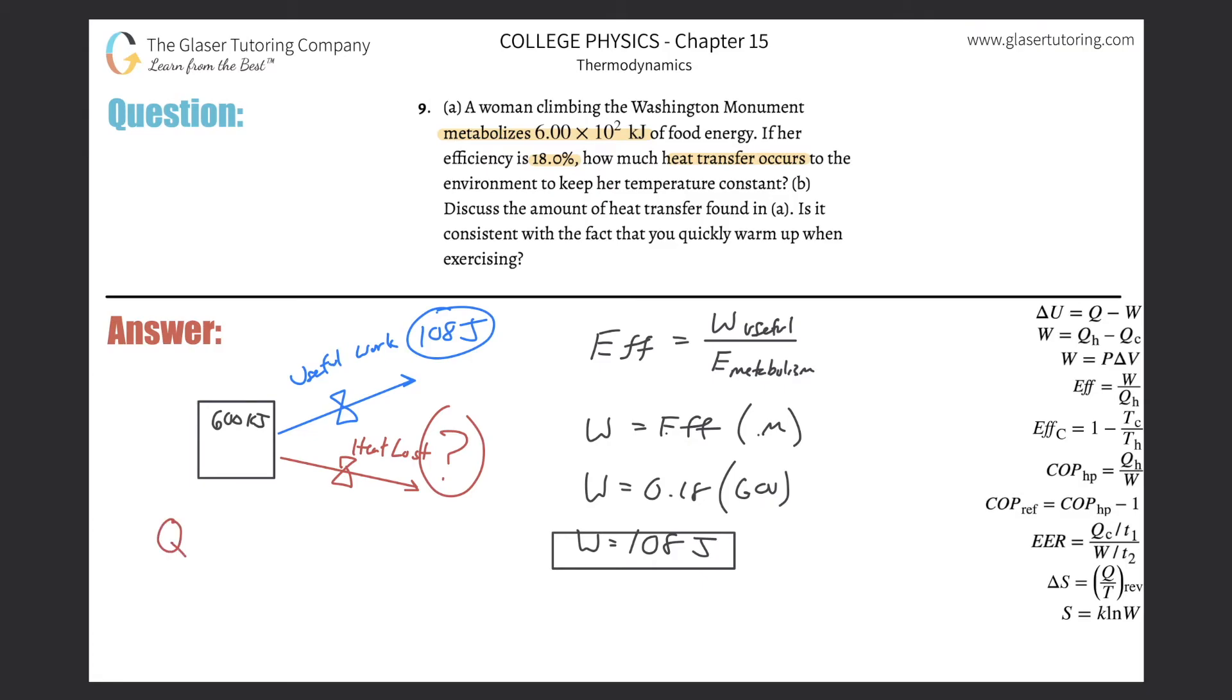So we're going to now take Q. Watch this: Q will be equal to the internal energy minus the work. I've talked about this formula too—you can use this thermodynamic formula. So this is 600 minus 108. Technically these should all be negative values and whatever, but the magnitude will be fine.